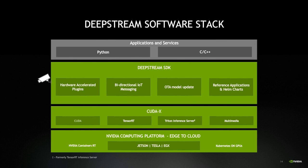Under the application layer is the SDK, consisting of various hardware-accelerated plugins that provide the highest throughput for computer vision and IVA applications — plugins for hardware-accelerated decode, encode, and other processing tasks. For deployment, customers can deploy using bare-metal systems or cloud-native containers using the NVIDIA container runtime. We are continuously improving the SDK, including support for bi-directional IoT messaging, which allows the cloud to control and configure DeepStream applications running on the edge. Over-the-air model update is also a new feature being added, allowing instantaneous model updates while the application is running.